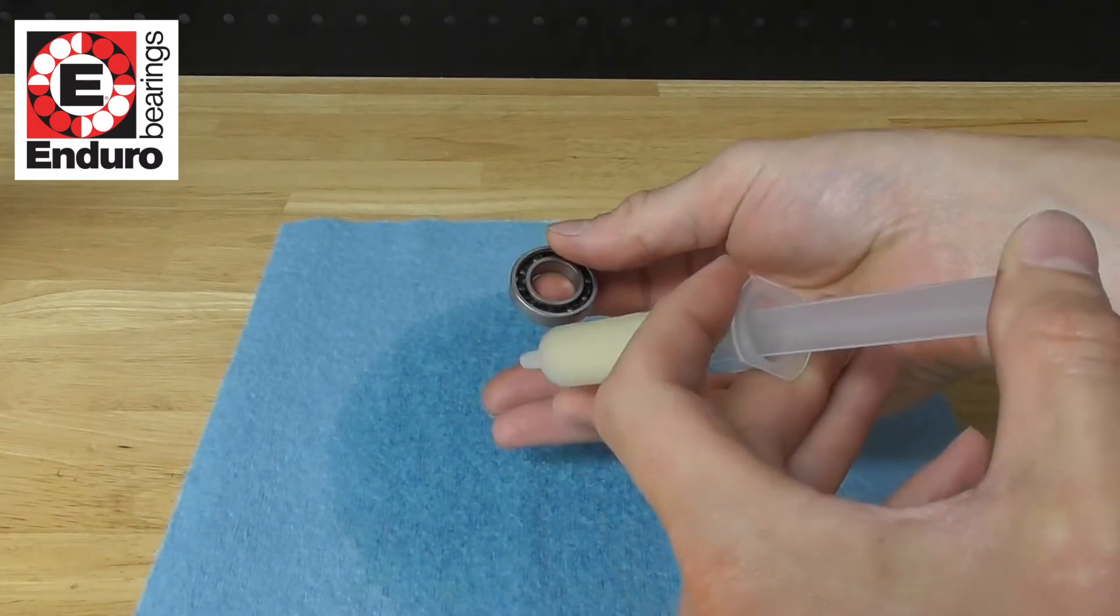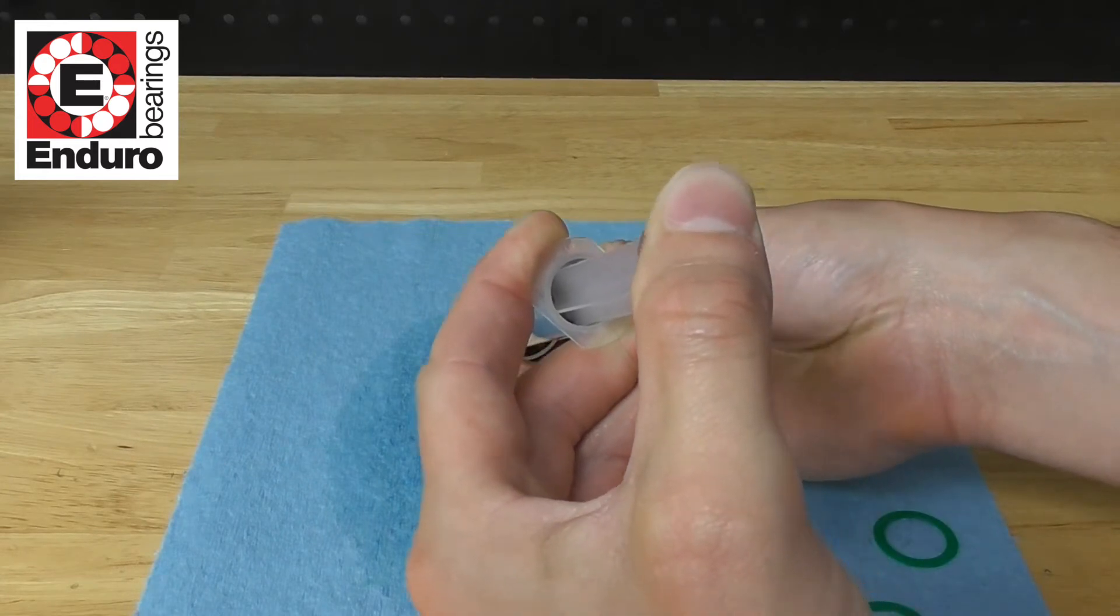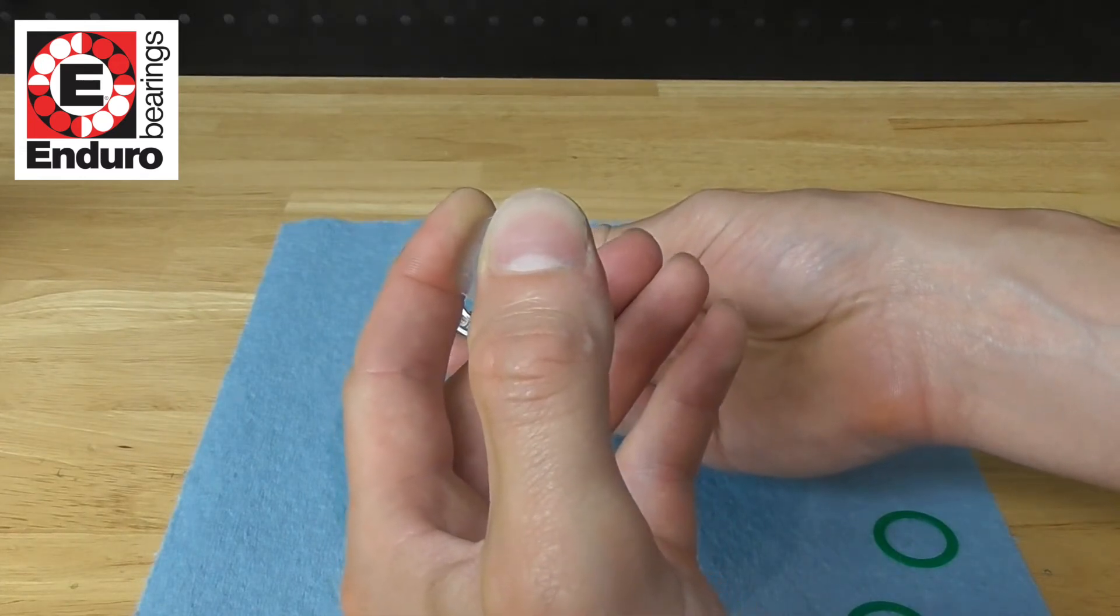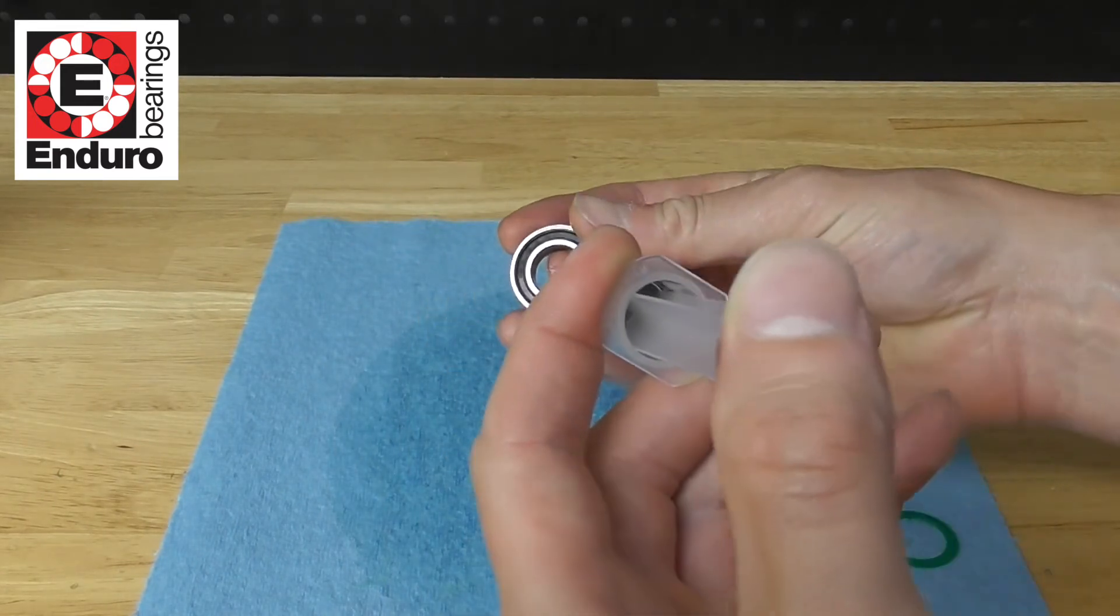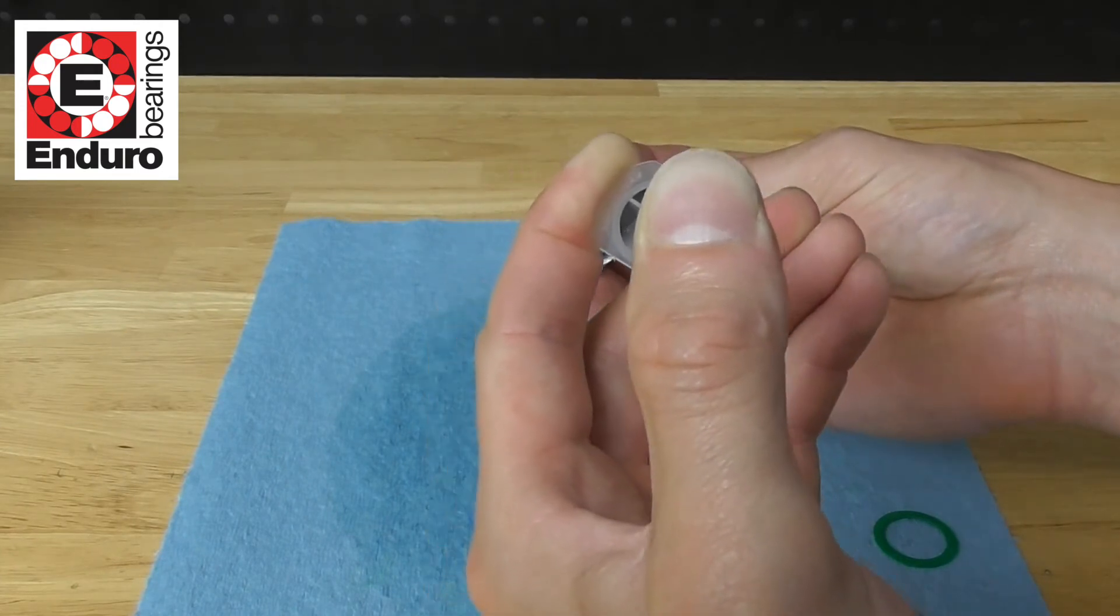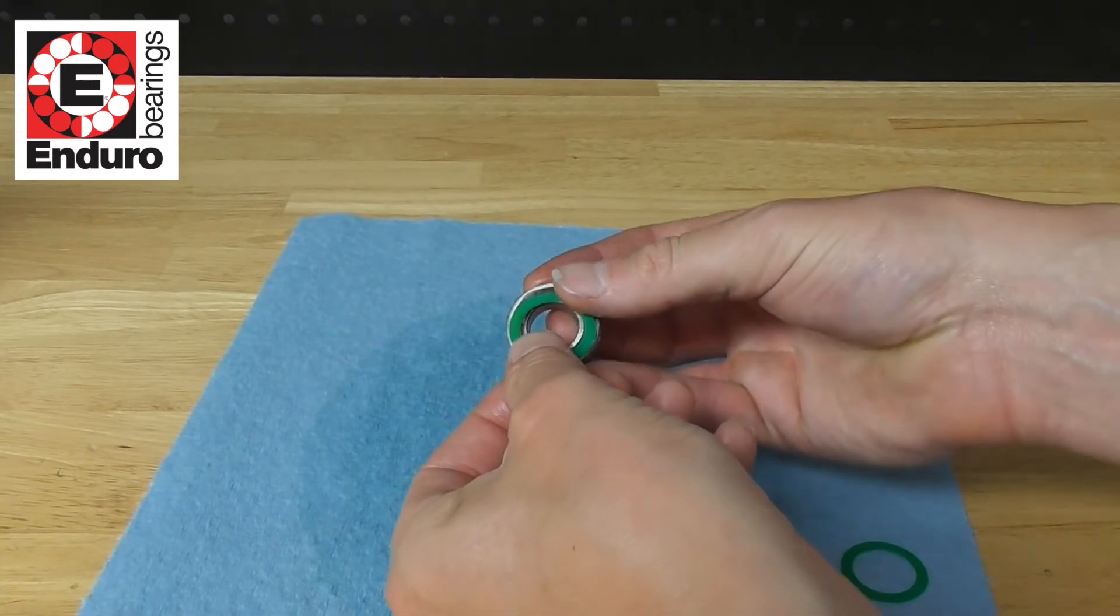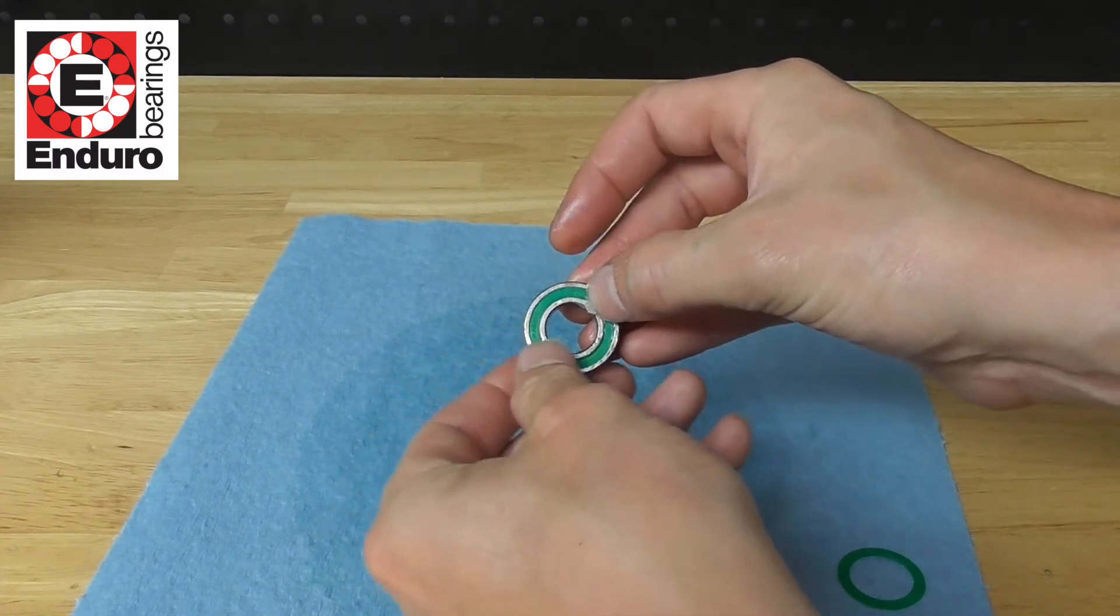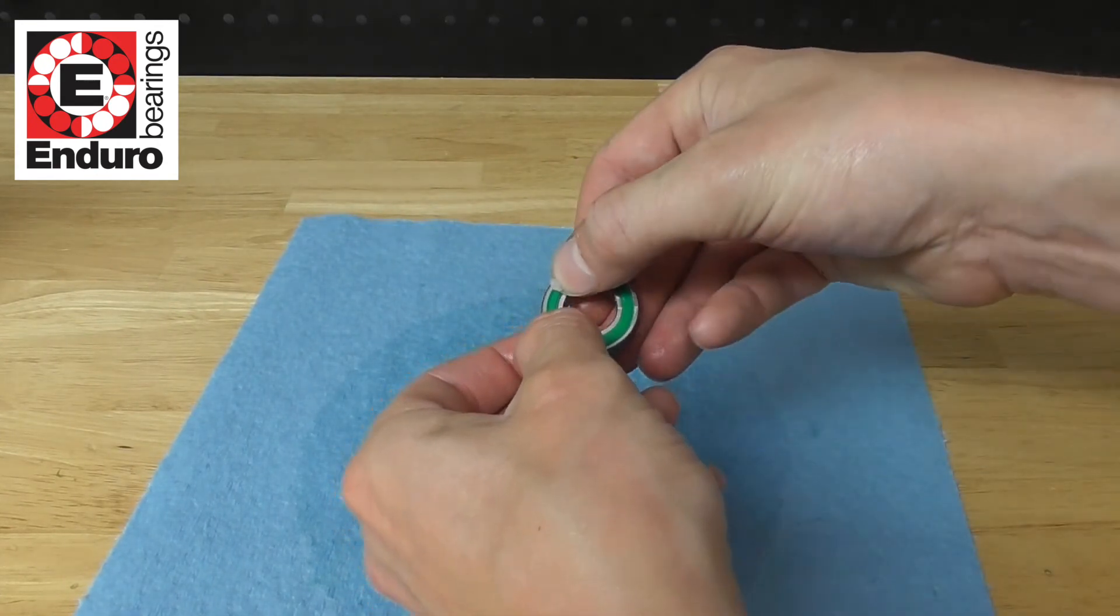Use a grease injector or syringe to fill between the races. Repeat the process on the opposite side until the bearing is properly filled.